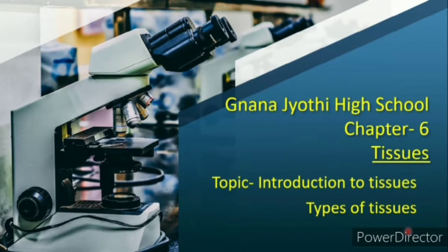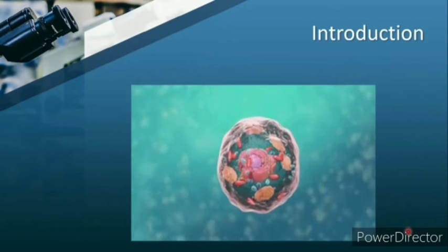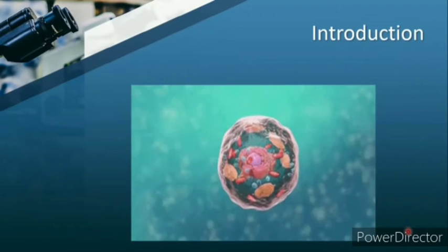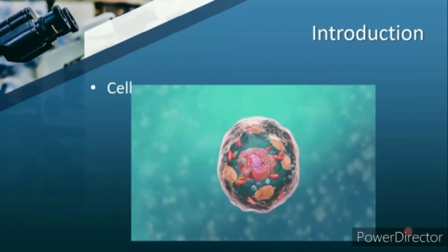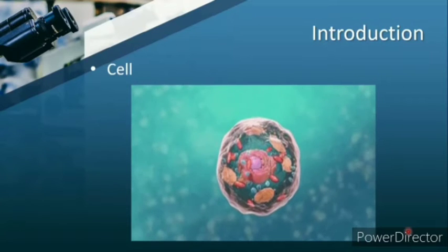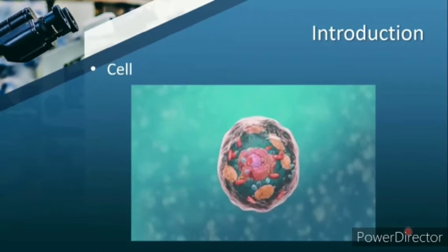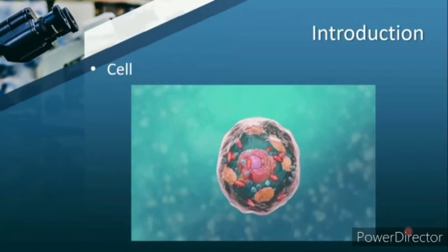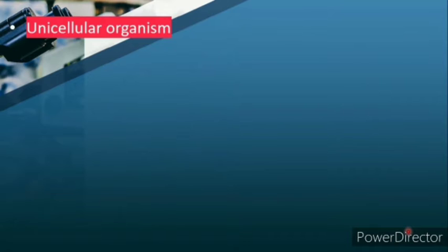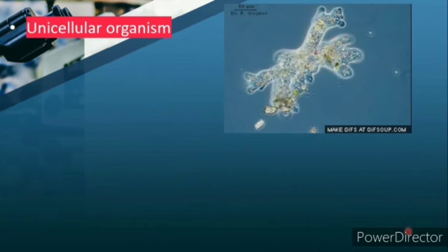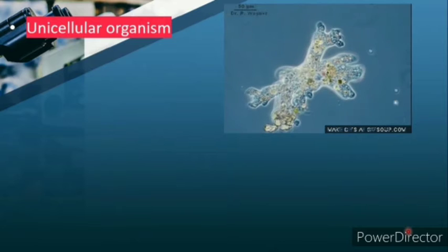In your previous class you finished the chapter 'The Fundamental Unit of Life', where you learned about the cell and the various components of the cell with its functions. You all know that the cell is the basic unit of life, and all organisms on earth are made up of cells. Depending upon the cell count, you have unicellular organisms, which are made up of a single cell.